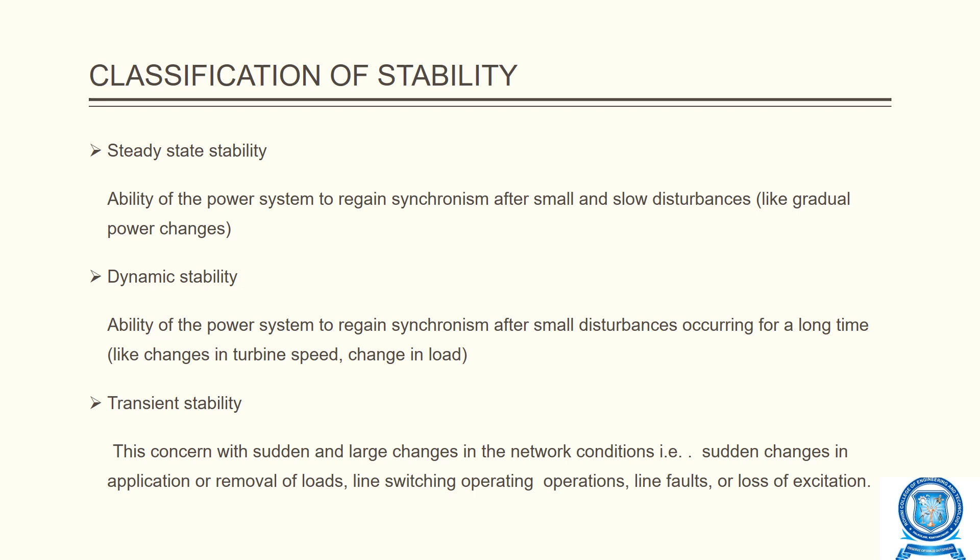The second type is dynamic stability. Dynamic stability is the ability of a power system to regain synchronism after a small disturbance and maintain it for a long time. Examples include turbine speed changes and changes in load.